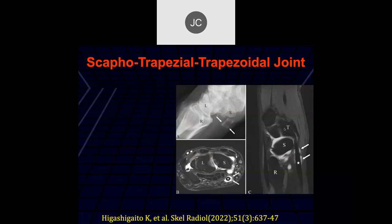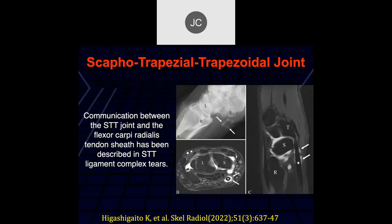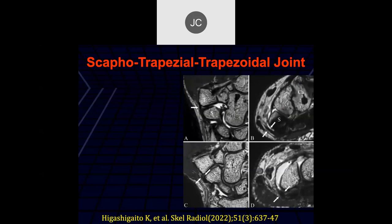Taysen: there's a star and arrows over the flexor carpi radialis — there's tenosynovitis there. Looks like they injected some contrast here, and there's the joint space — I think this was an arthrogram injection. I've actually never done an injection of this joint myself. You can see a lot of the different ligaments in this area — usually what we're interested in is either traumatic injuries and fractures or the degree of degenerative disease.